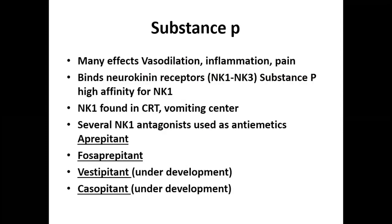The next vasodilator is substance P, which has many effects including vasodilation, inflammation, and pain. It binds to neurokinin receptors NK1 and NK3, with high affinity toward NK1. It is usually found in the vomiting center in the brain. Whenever substance P is secreted in excess, patients experience significant vomiting. Antagonists used as anti-emetics include aprepitant, fosaprepitant, and vestipitant, while casopitant is under development.